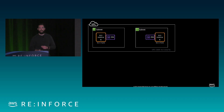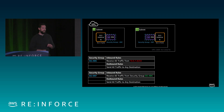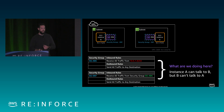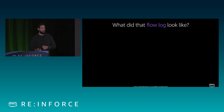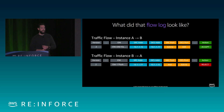Looking at a security group where we're not allowing full two-way communications: security group ABC is only allowing traffic from 10.5.1.0/24, which is outside the range of the instance we want to communicate with. So instance A can talk to instance B, but B can't talk to A. In the flow log, the first entry from A to B is accepted, but the second entry is actually rejected — giving us visibility into why traffic isn't reaching an instance.